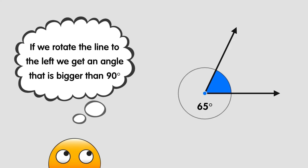On the other hand, if we rotate the line to the left instead of the right we would get an angle that is bigger than a right angle.